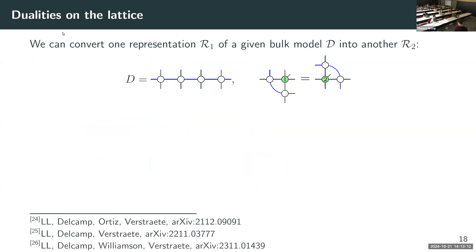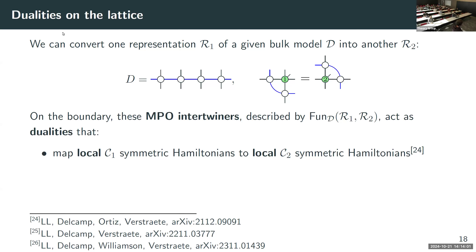Now a bit about dualities. You have these different lattice representations parameterized by the module category R. You can imagine choosing different representations in different patches of your lattice; the question is how to glue those together. It turns out there is an MPO sitting there that intertwines between the two representations, and you can move it through your lattice to turn one representation into another. In categorical language this is called a module functor. These are what I refer to as dualities: they map a local categorically symmetric Hamiltonian with categorical symmetry C1 to some local categorically symmetric Hamiltonian with categorical symmetry C2, which don't have to be the same — for example, a model with S3 symmetry can map to one with rep(S3) symmetry.